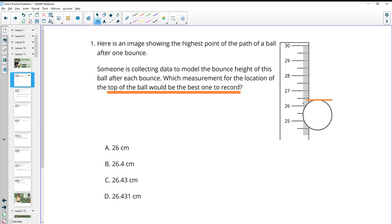And so centimeters are split into 10 equal pieces. And so if you do one whole divided by 10, that gives you 0.1 for each of those little dashes. So this is at 26 and then 1, 2, 3, 4 tenths. So 26 and 4 tenths is the same as 26.4. So B would be the best option there.